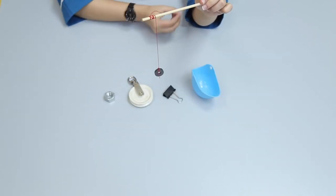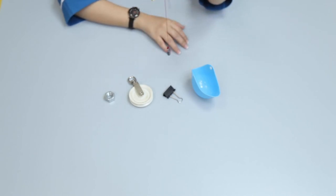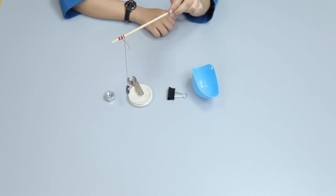Place it towards the items on the table, one by one. Now observe the items that get attracted by the magnet.